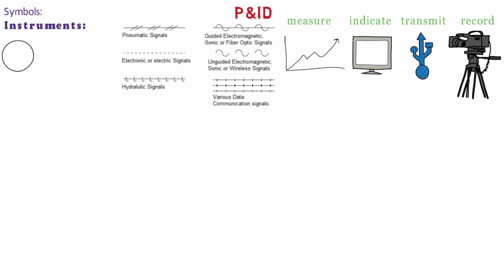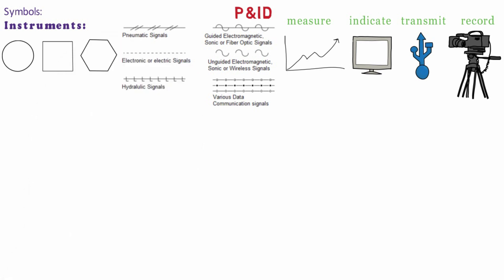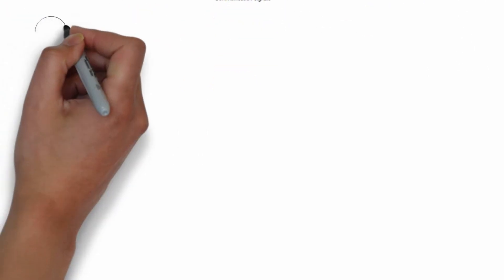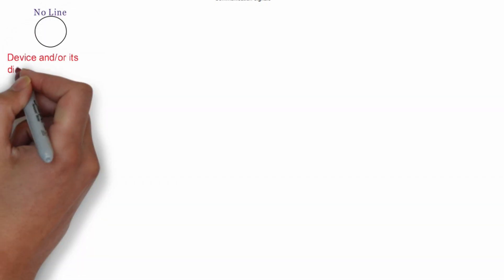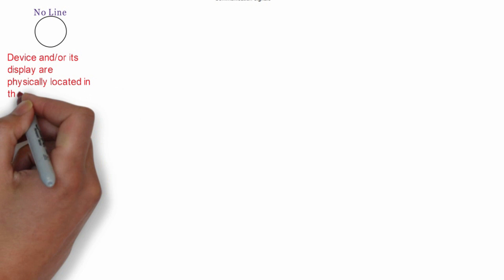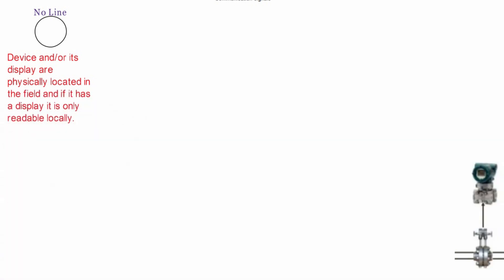The bubble is a simple circle, square, or hexagonal shape. The different types with their meanings are as shown. A bubble with no line means that the device and or its display are physically located in the field and if it has a display, it is only readable locally.